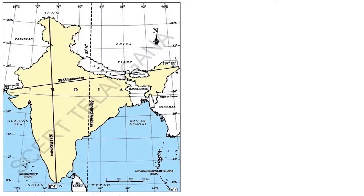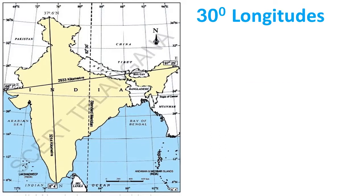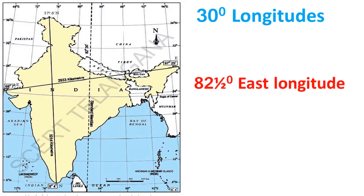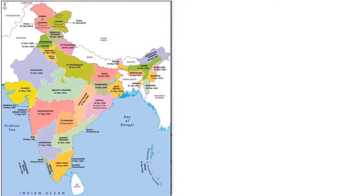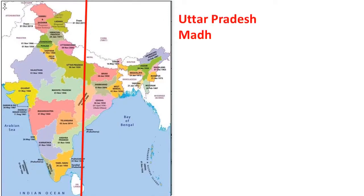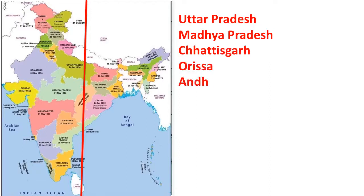The longitudinal extent of India is 30 degrees. The standard meridian of India, which is 82.5 degrees east longitude, passes through the middle of India. As you can see from this image, the standard meridian passes through five states: Uttar Pradesh, Madhya Pradesh, Chhattisgarh, Orissa, and Andhra Pradesh.